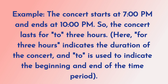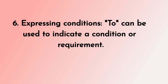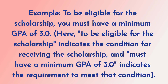6. Expressing conditions. 'To' can be used to indicate a condition or requirement. Example: To be eligible for the scholarship, you must have a minimum GPA of 3.0. Here, 'to be eligible for the scholarship' indicates the condition for receiving the scholarship, and 'must have a minimum GPA of 3.0' indicates the requirement to meet that condition.